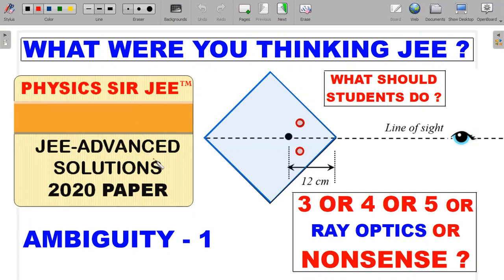Here we take up a controversial question from the JEE Advanced 2020 paper, which is Paper 2. There was a ray optics question. On the face value it looks like an oblique viewing question. It's an integer-based question and there was a lot of furor among the students and teachers community when the preliminary key came up as three or four or five.